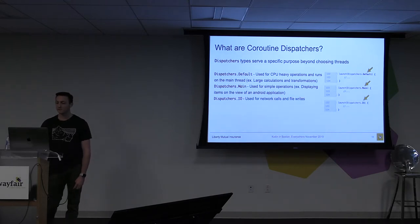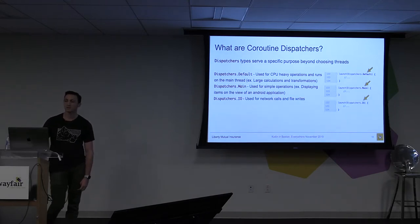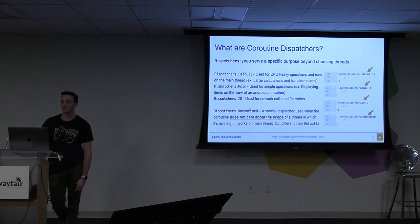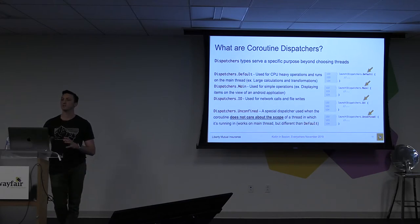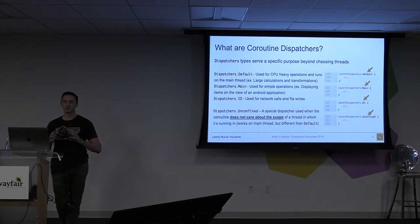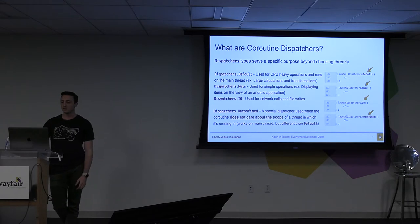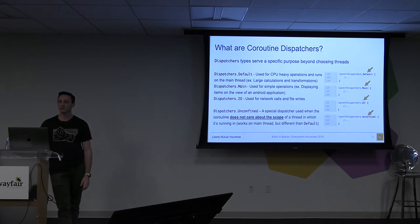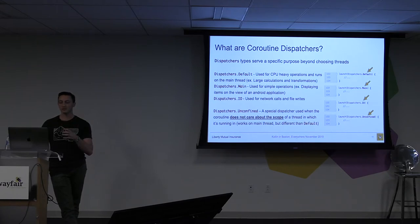The next is the IO dispatcher, used for network calls — it's primarily made for that. And then the last is the unconfined dispatcher, which is kind of like a rogue dispatcher — it does what it wants because it doesn't care about the scope it lives within. It's on a global piece, and the global scope is very similar to the unconfined dispatcher, where it basically runs on its own thread that's not incorporated as part of the coroutine scope it's nested within.